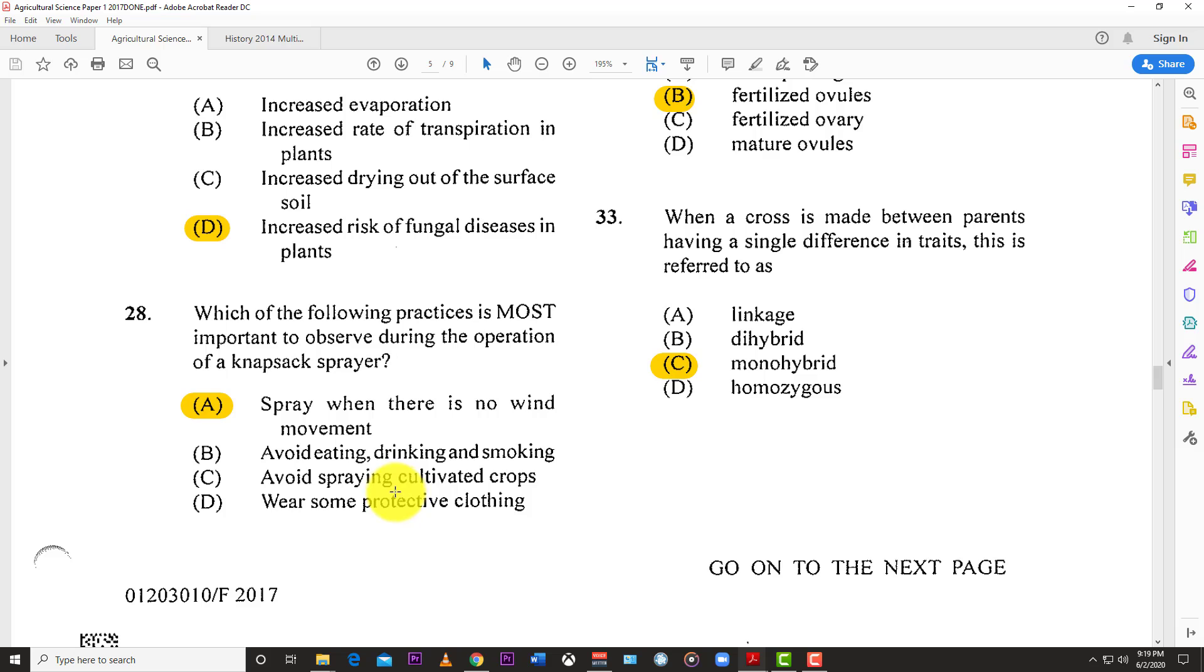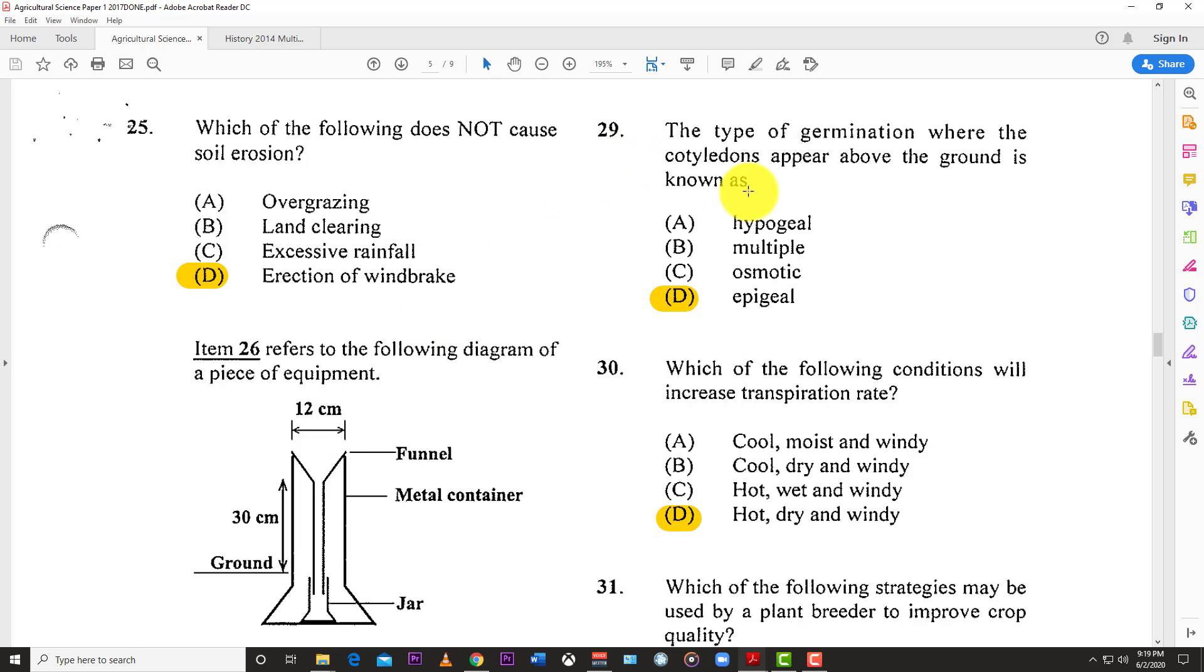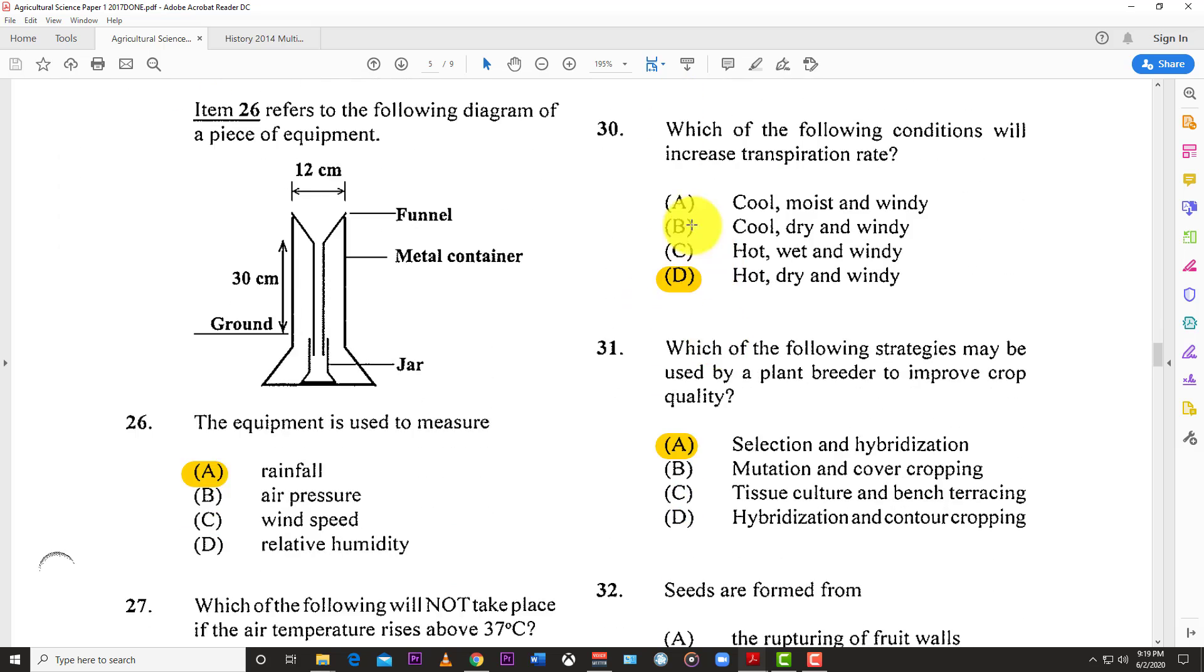These other options like avoid eating, drinking, and smoking, or avoid spraying cultivated crops—you can spray cultivated crops because some herbicides are selective and kill some crops while leaving others. You have to wear protective clothing, but the most important thing is to avoid the drift.